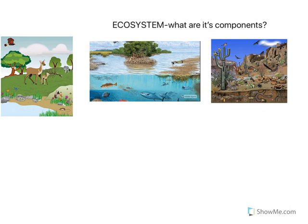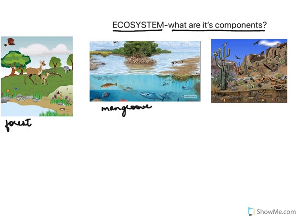In this chapter on our environment, we begin by learning about ecosystems and their components. The first picture is of a forest, then a mangrove, and then a desert. In all these pictures we see that organisms such as plants, animals, humans, and microorganisms, as well as physical surroundings like water and soil, interact with each other and maintain a balance in nature.